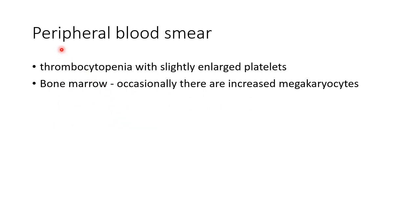The peripheral blood smear findings in ITP show thrombocytopenia with slightly enlarged platelets. The bone marrow will usually be normal, but occasionally there are increased megakaryocytes.